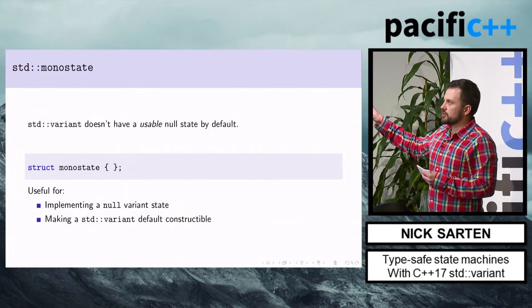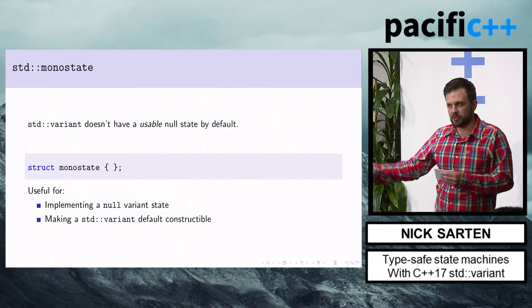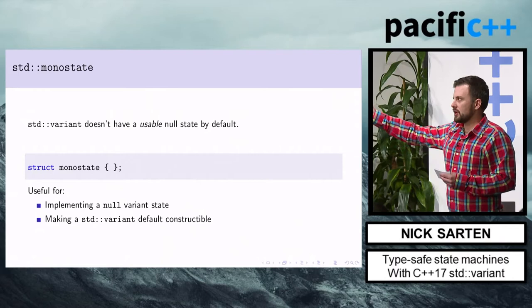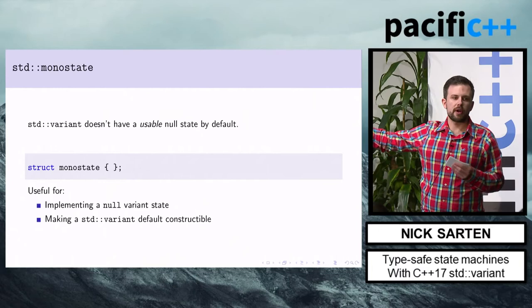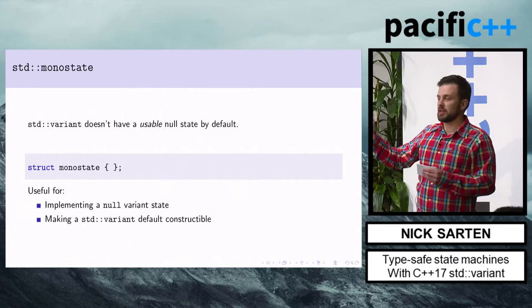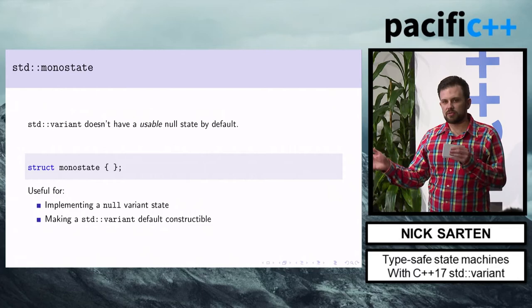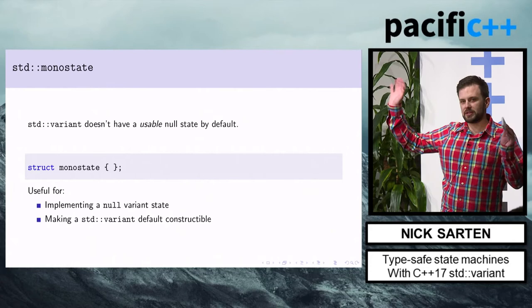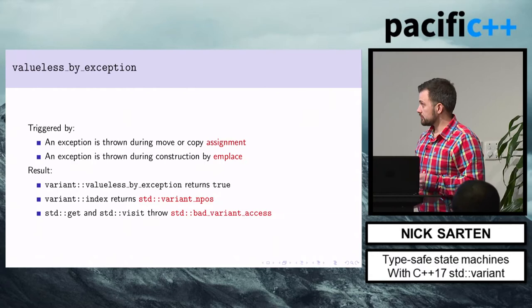Why use std::monostate rather than your own empty null struct? Because this is equivalent across API boundaries, across programs and libraries. All operators are defined for it, and std::hash is defined so that every single instance of std::monostate will be equal at runtime — whereas that may not hold true for your own custom structs.